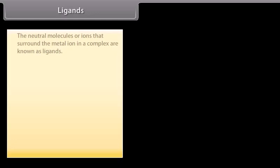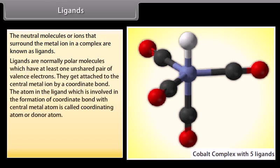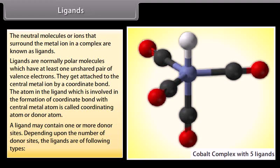The neutral molecules or ions that surround the metal ion in a complex are known as ligands. Ligands are normally polar molecules which have at least one unshared pair of valence electrons. They get attached to the central metal ion by a coordinate bond. The atom in the ligand which is involved in the formation of the coordinate bond with the central metal atom is called the coordinating atom or donor atom. A ligand may contain one or more donor sites, and depending upon the number of donor sites, ligands are of the following types.